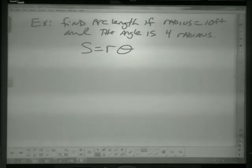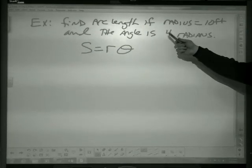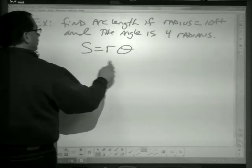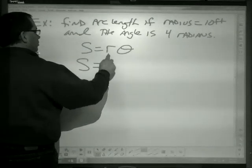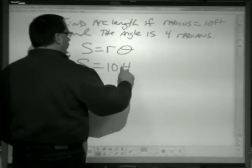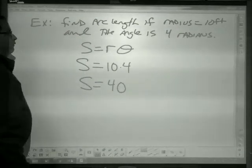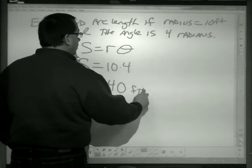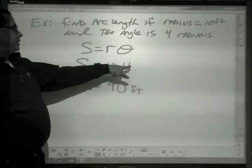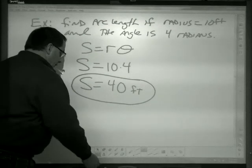Let's look at a problem. Find the arc length if the radius is 10 and the angle is 4 radians. Here's my formula: arc length equals radius 10 times angle 4. The arc length then is 40 feet. Radians is a unitless measure, so I have 10 feet times 4 is 40 feet. That is how you find arc length.